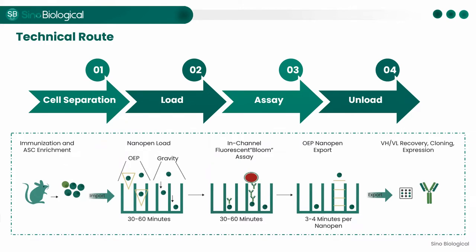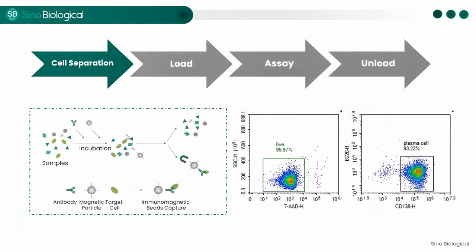Antibody screening through the Beacon platform generally includes five steps: cell import, cell screening, validation tests, target cell export, and antibody gene identification. Cell import, validation tests, and export are accomplished by the Beacon system. Beacon platforms use plasma cells for antibody screening, and plasma cells need to be enriched from lymphoid tissues first. There are two methods for plasma cell enrichment: fluorescence-activated cell sorting and magnetic bead-based sorting. Compared with FACS, magnetic bead sorting is faster and less damaging to cells, so it is usually preferred.